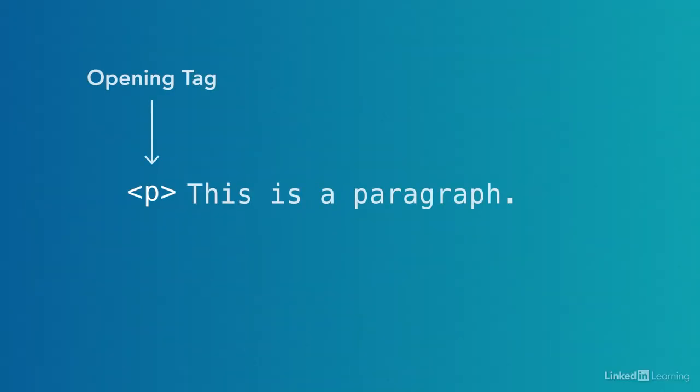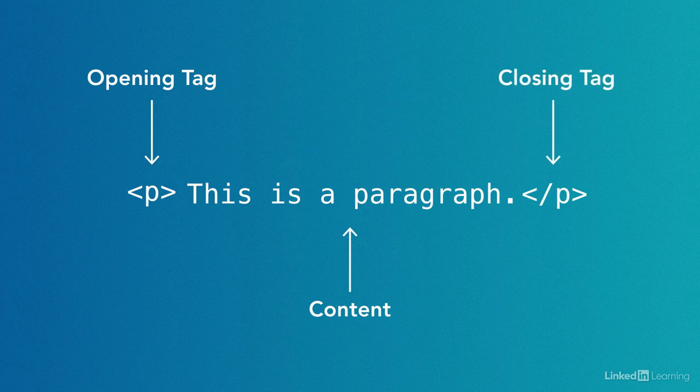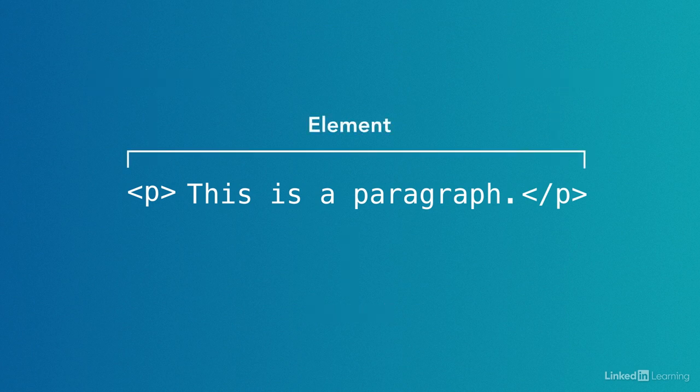To mark up a paragraph properly, we use an opening tag at the beginning of the paragraph and then a closing tag at the end, like this. The opening tag marks the beginning, the content goes in the middle, and the closing tag marks the end. These opening and closing tags travel the world together in pairs. The whole thing is called an element.